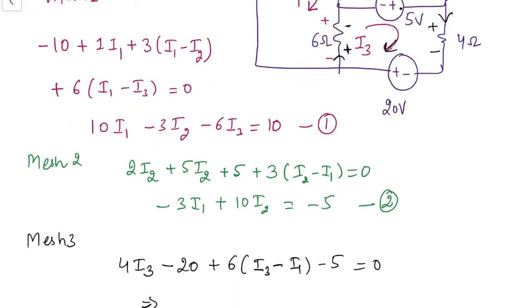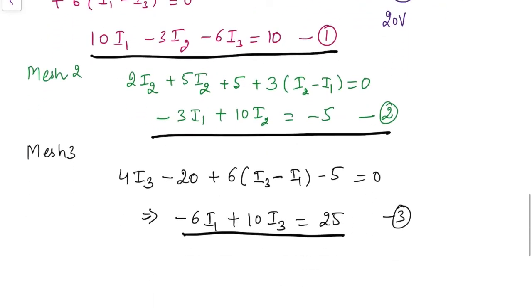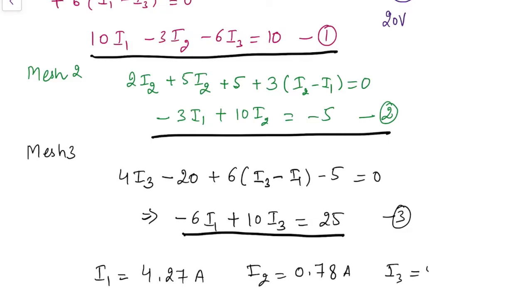This gives us the third equation: minus 6i1 plus 10i3 equals 25. Now with three equations and three unknowns, we solve simultaneously. The solution gives i1 equals 4.27 amperes, i2 equals 0.78 amperes, and i3 equals 5.06 amperes.